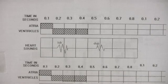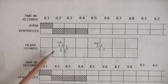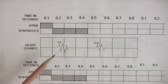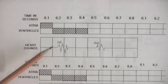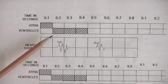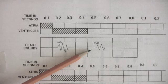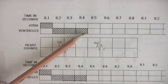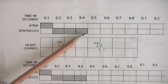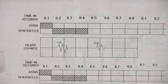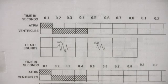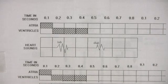The heart makes essentially two sounds, a lub and a dub sound, or S1 and S2. Notice that the lub sound comes shortly after the beginning of ventricular systole, and the dub sound occurs shortly after the end of ventricular systole. These sounds are due to several things: partly the actual contraction of the cardiac muscle, the closing of the valves, and the turbulence that the blood makes when the valves open or close.